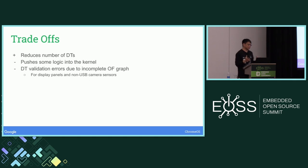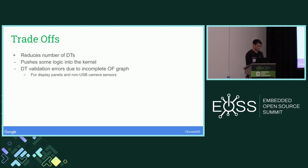This lets you merge different SKUs into one common device tree. However, it pushes some logic into the kernel. And if you're merging multiple panels or camera sensors that are part of an OF graph, the device tree compiler will complain that you have one or more graph endpoints without a remote endpoint — an incomplete graph. This could be solved by changing the device tree compiler to ignore this class of error.